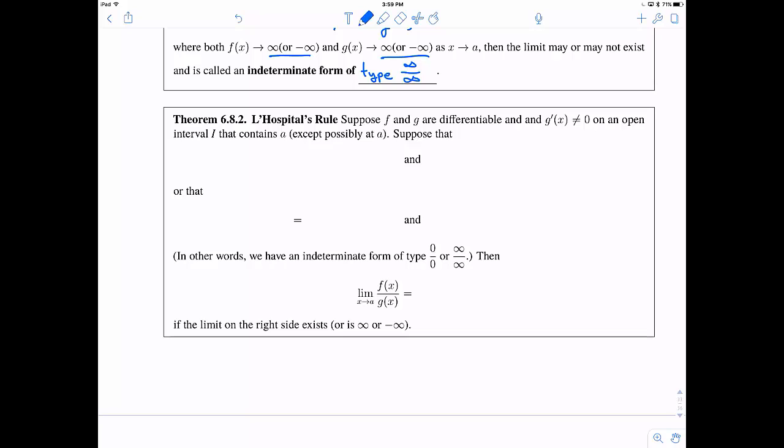So L'Hopital's rule will apply to these two situations up here. So we need to have f and g are differentiable, g'(x) is not equal to 0, and we have the setup up above. So we have limits as x goes to a of, and either f(x) goes to 0 and g(x) goes to 0, or f(x) needs to go to positive or negative infinity, and g(x) needs to go towards positive or negative infinity. So again, we have one of the two indeterminate forms up above.